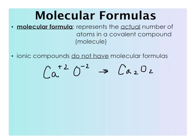For example, if we had calcium and oxygen in an ionic compound, instead of writing Ca2O2, we would write the simplest ratio of ions that's possible. We would write CaO. This is how we always write the chemical formula for an ionic compound.